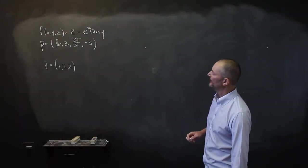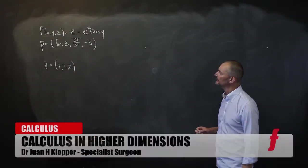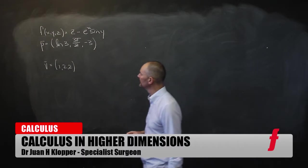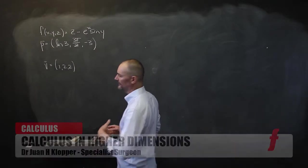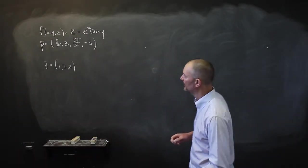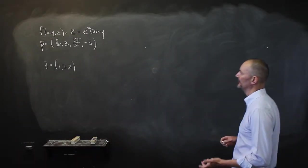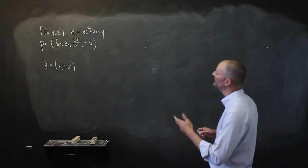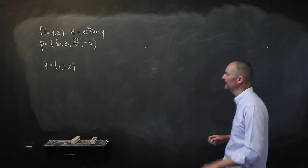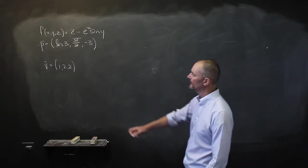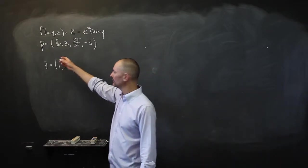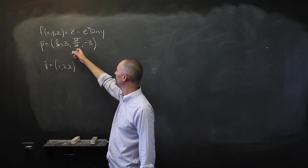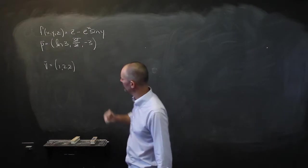Here we have our multivariable function — a function in four-dimensional space. f(x, y, z) = z minus e to the power x times sine of y. This is the point we're interested in, written as a vector: natural log over 3, 3π over 2, and negative 3.